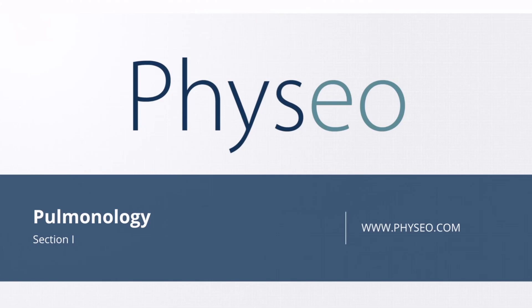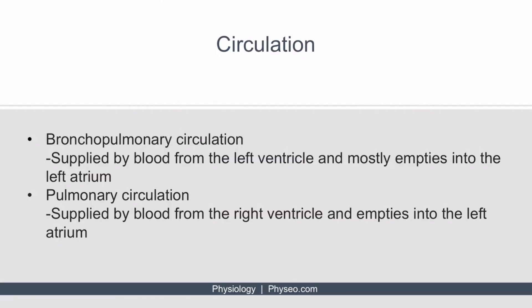Welcome to the chapter on pulmonology. In this section, I'll be providing an overview of bronchopulmonary circulation and pulmonary circulation. Bronchopulmonary circulation is supplied by blood from the left ventricle and mostly empties into the left atrium. Pulmonary circulation is supplied by blood from the right ventricle and empties into the left atrium.